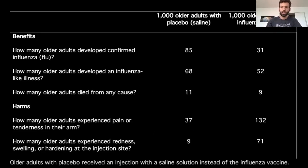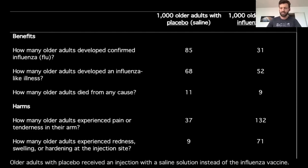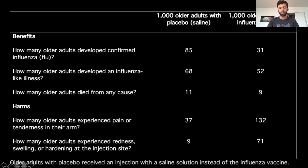We compared presenting harms and benefits in a table versus text, writing both to contain the exact same information — making the test difficult for ourselves, because the more similar the formats, the less likely you are to find a difference. Here's the table format: a thousand older adults who got placebo versus a thousand who got influenza vaccine, with benefits and harms compared across them. For example, the top row shows how many older adults developed confirmed influenza — the placebo group had two to three times higher rates.